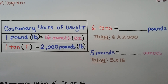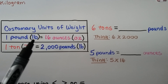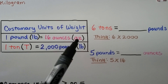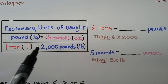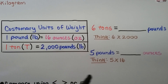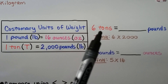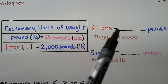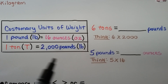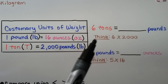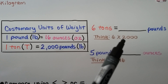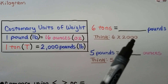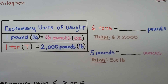For customary units of weight: one pound (lb) equals 16 ounces (oz), and one ton (T) equals 2,000 pounds. To find how many pounds are in six tons, we multiply 6 × 2,000. Using the basic fact 6 × 2 = 12, then adding three zeros gives us 12,000 pounds.